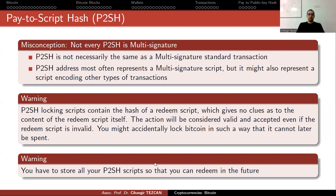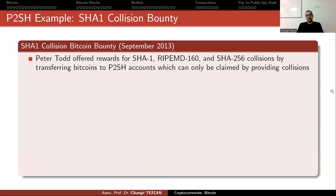Another warning: you have to store all your pay-to-script hash scripts so that you can redeem them in the future. If you had the script converted into a hash and people start sending money to that address, but then you lose the script, you cannot redeem it. So you have to store them. Let me show you an example of a pay-to-script hash that is not a multi-signature. Peter Todd offered rewards for SHA-1, RIPEMD-160, and SHA-256 collisions by transferring Bitcoins to pay-to-script hash accounts, which can only be claimed by providing collisions.